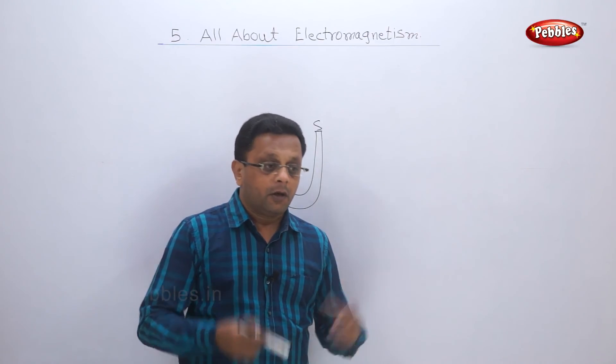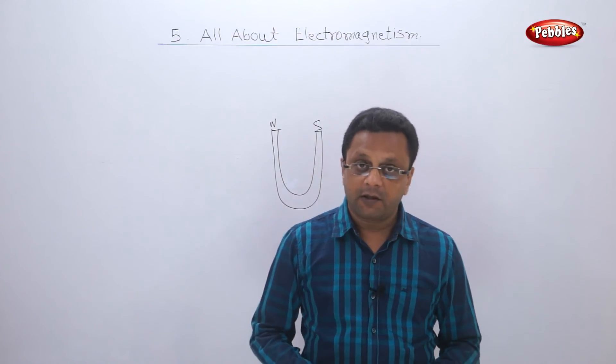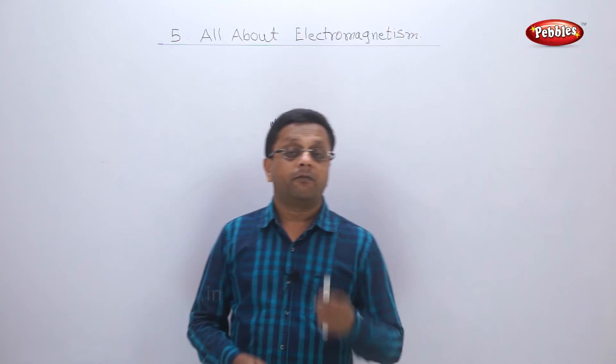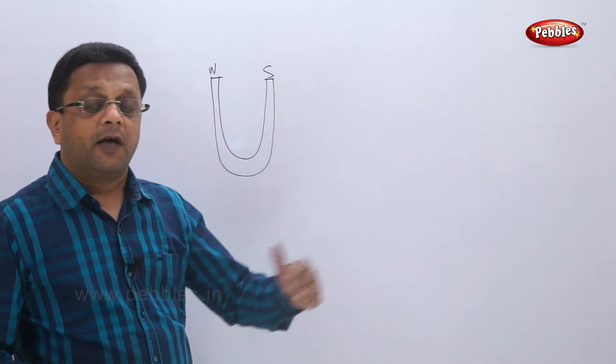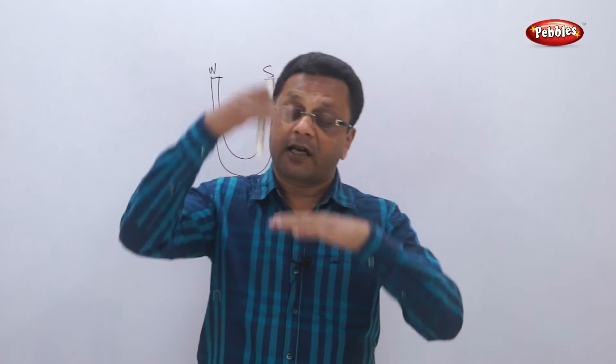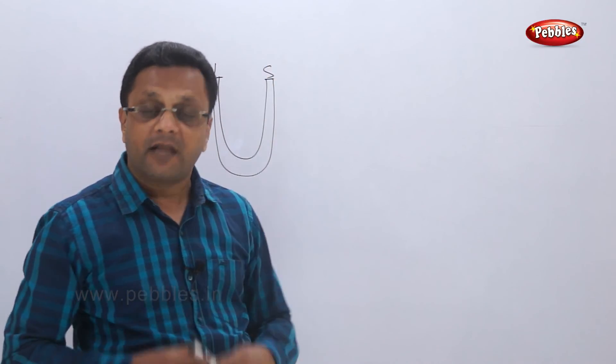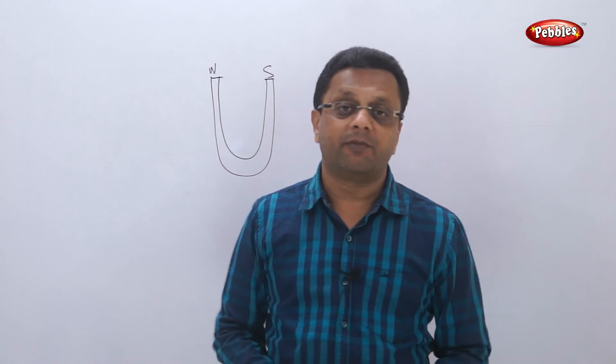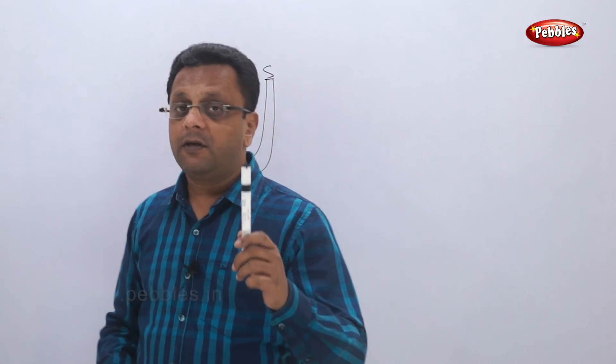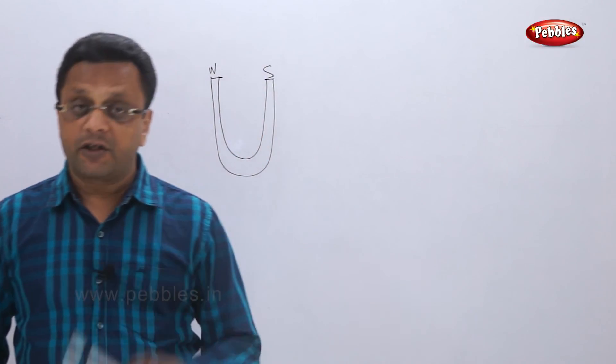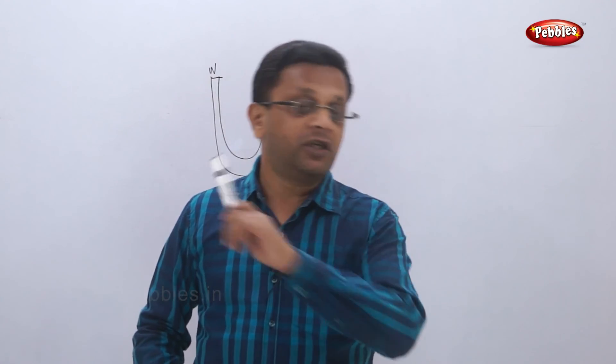Now, this direction of force depends on the direction of current and direction of magnetic field. Whenever this direction of current and direction of magnetic field are at right angles to each other, are perpendicular to each other, in that case the deflection is maximum. That means the maximum force is exerted whenever the magnetic field direction and current direction are at right angles to each other.